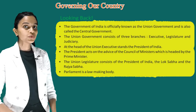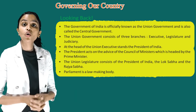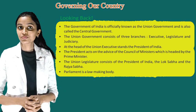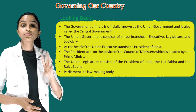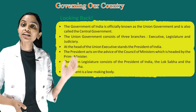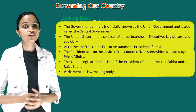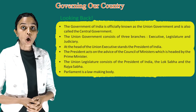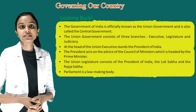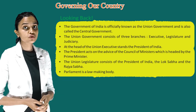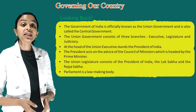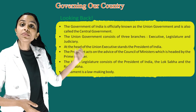So children, it's time to look back. The Government of India is officially known as the Union Government and is also called the Central Government. The Union Government consists of three branches: Executive, Legislature and Judiciary. At the head of the Union Executive stands the President of India, who acts on the advice of the Council of Ministers, headed by the Prime Minister. The Union Legislature consists of the President of India, the Lok Sabha and the Rajya Sabha. And Parliament is a law-making body.